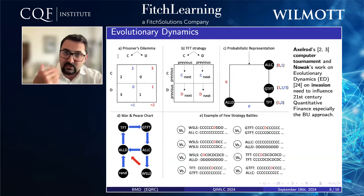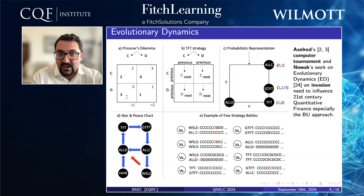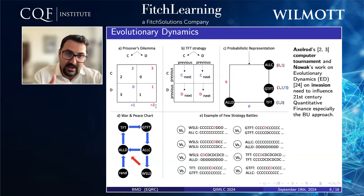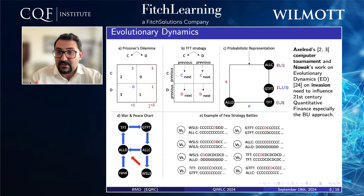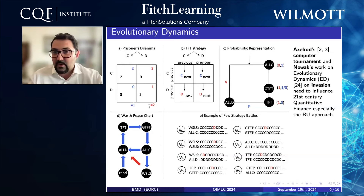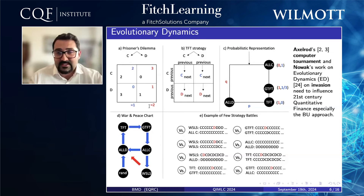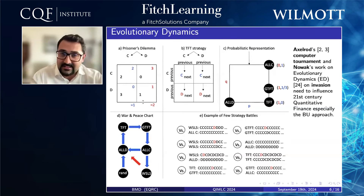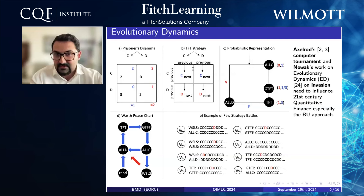Depending on whether one cooperates and the other cooperates or deceives, there's a specific payoff from that interaction. The reason it's called a dilemma is that if you interact with someone only once, there's an incentive to deceive. This bothered many evolutionary biologists in the 70s, and they came up with the Axelrod Computer Tournament, in which different strategies face each other. A relatively simple strategy emerged from all these interactions, known as tit-for-tat.